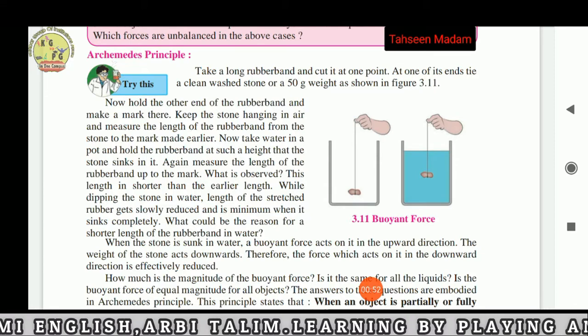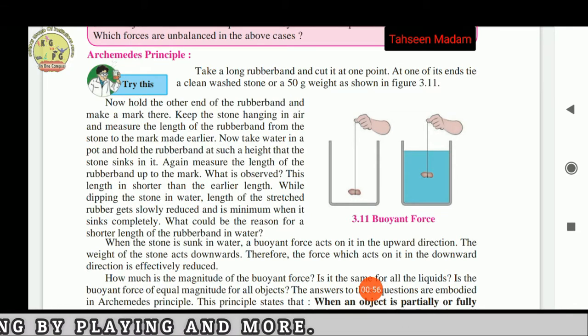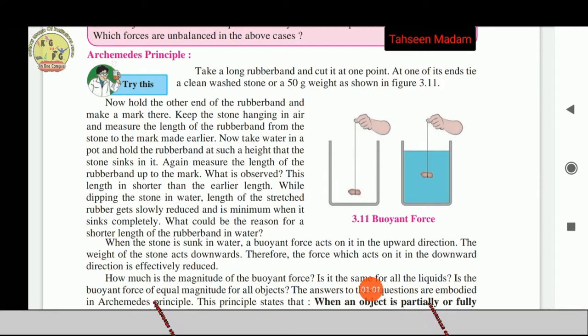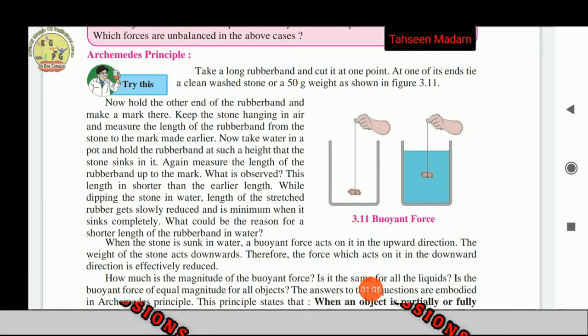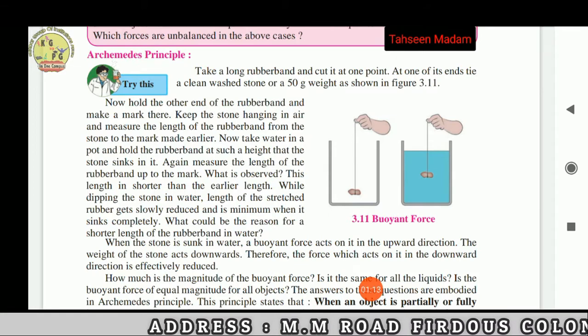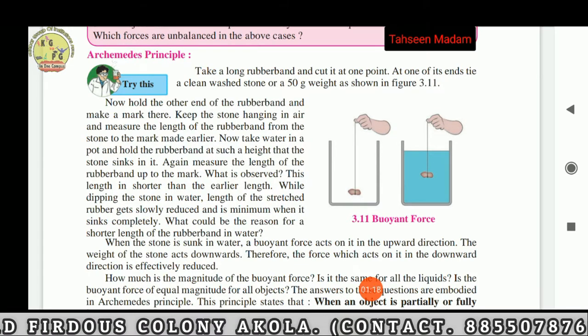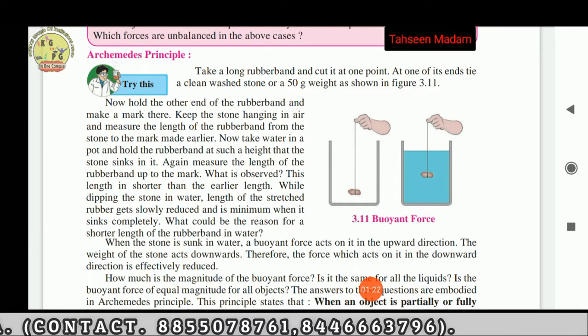Take a long rubber band and cut it at one point. At one of its ends, tie a clean washed stone or a 50-gram weight as shown in figure 3.11. Try this. Now hold the other end of the rubber band and make a mark there. Keep the stone hanging in air.